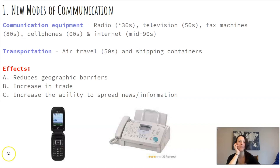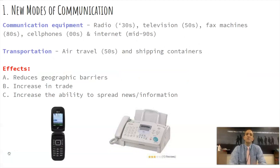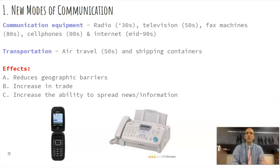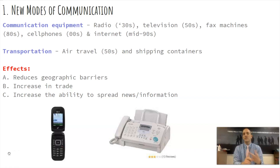New modes of communication. So let's rock and roll on some advances of technology. Most of these things should be pretty obvious to you. This Unit 9 is stuff you probably already know, but I'm going to try and synthesize it into what makes sense. Number one, in terms of technology of the 20th and 21st century, is new modes of communication. There are really two main ways we see this — one is through communication equipment. Radios in the 30s allow people to spread messages. We have radio in the 30s — we talked about FDR and Hitler with that.